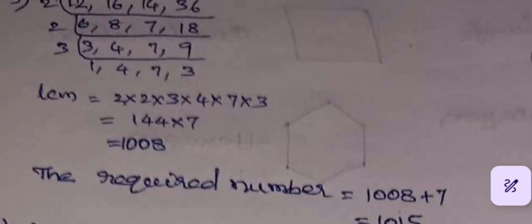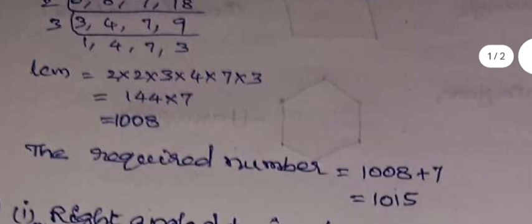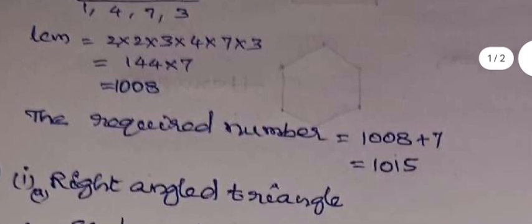But the required number is 7 should be the remainder when that number is divided by 12, 16, 14 and 36, and it should be the least number. So for that what we have to do, whatever the remainder that is required we have to add that remainder to the LCM so that whatever extra we added, it becomes the remainder. That's why 7 should be added to 1008.